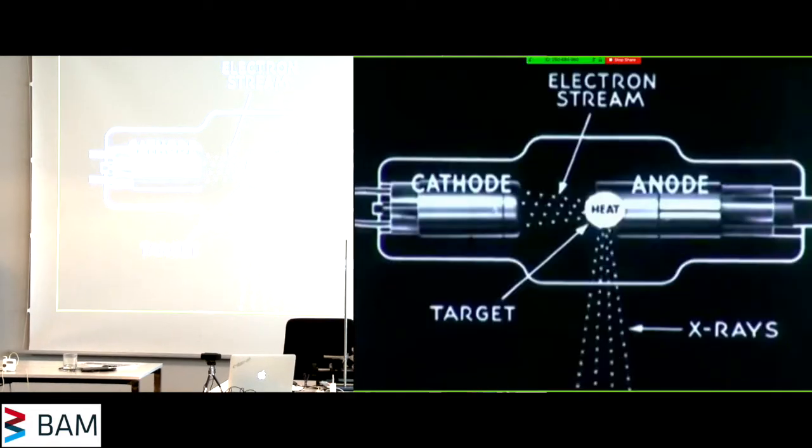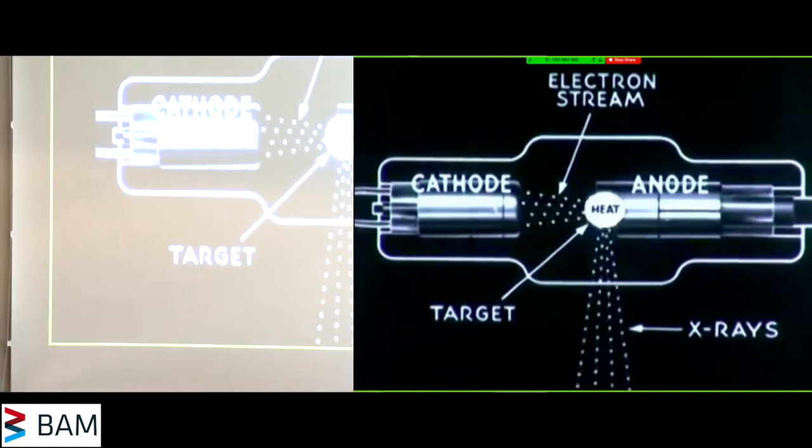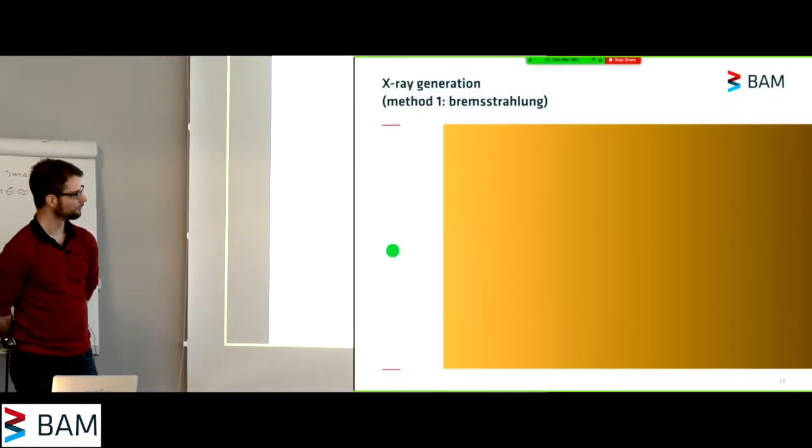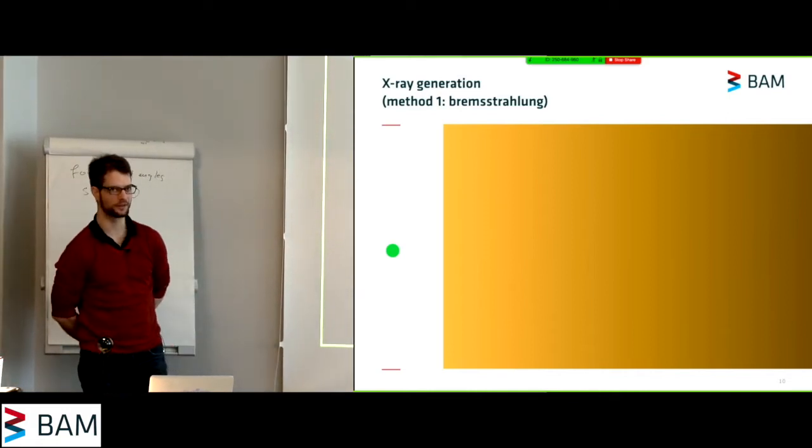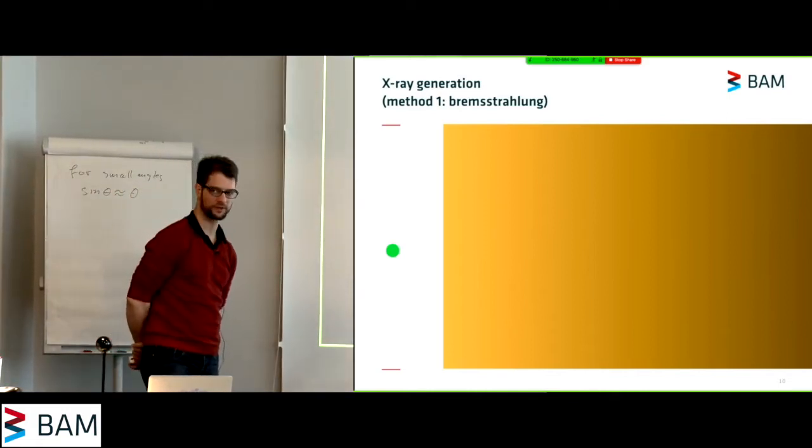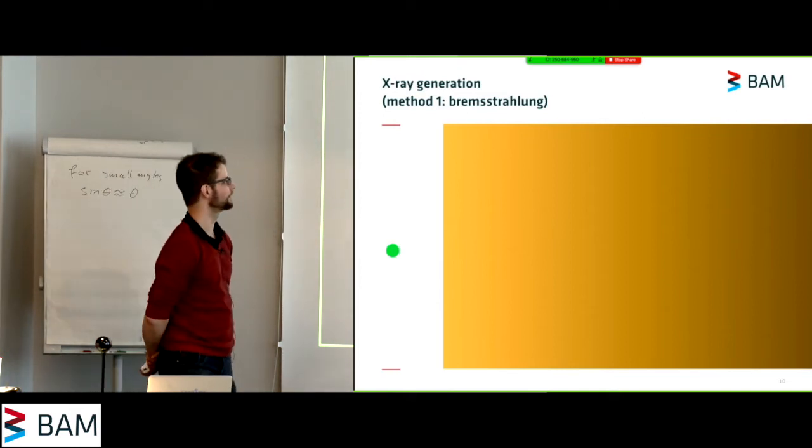All right, so to this day we still use this principle for generating x-rays. But what exactly happens when the electron stream strikes the target? Well, you can have one of two effects occurring, either of which can be used for generating x-rays.